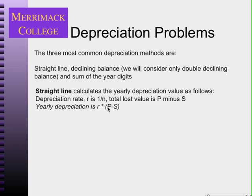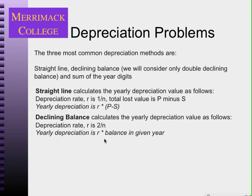The declining balance method is a little more accurate. We've all lived through this — you buy a new car and drive off the lot, and as the standing joke goes, it loses most of its value as soon as you drive onto the street, then loses value at a lower rate after that. The declining balance captures that idea: it loses more value toward the beginning. This calculates a depreciation rate using 2 over n, and that rate is multiplied by the balance in each given year.